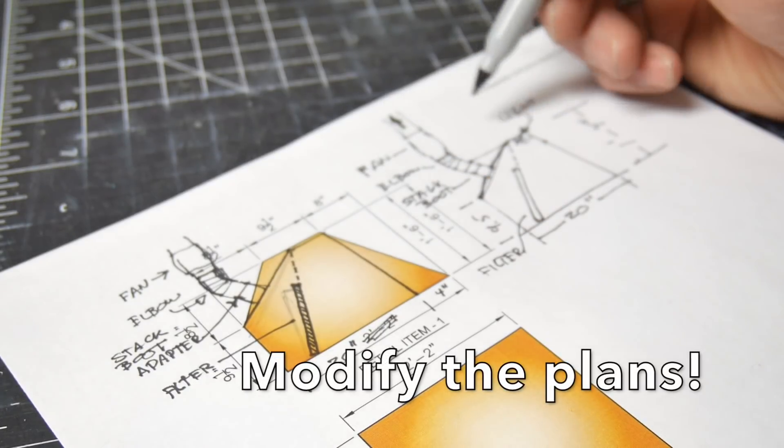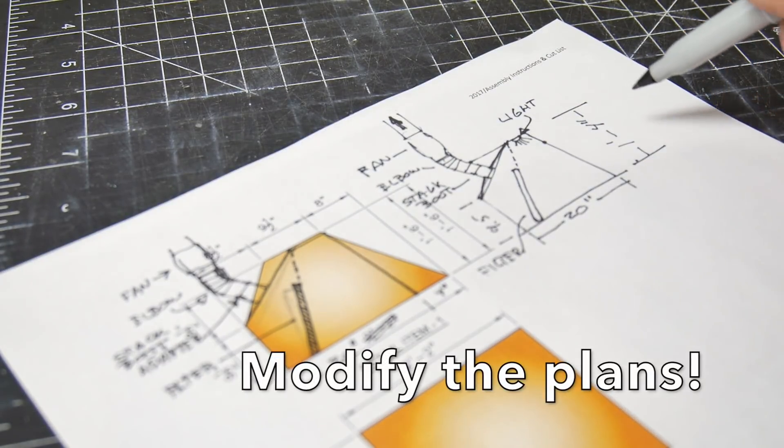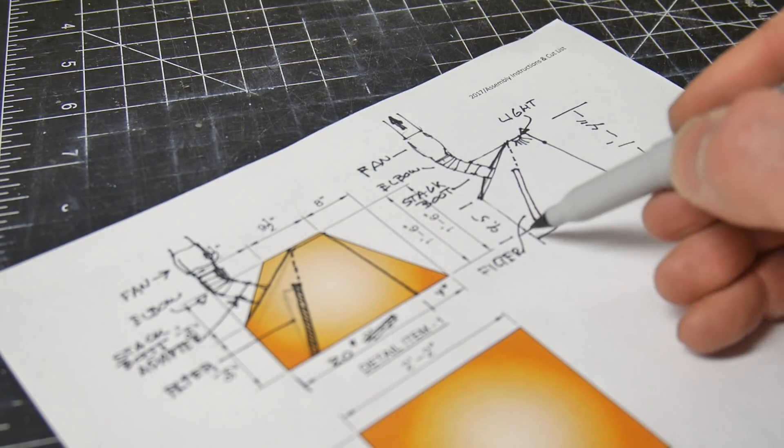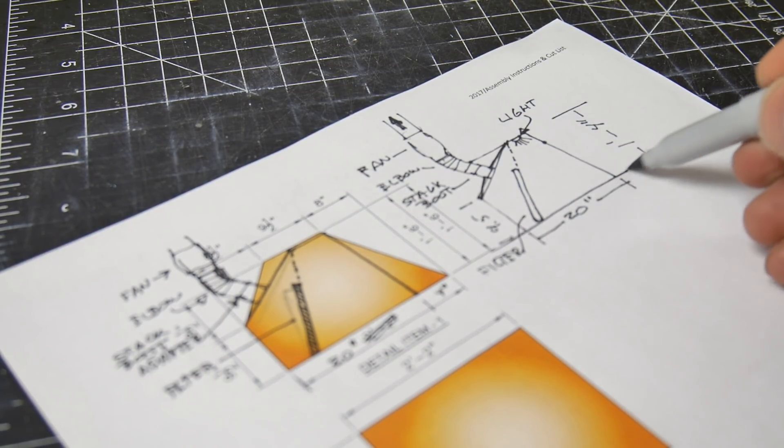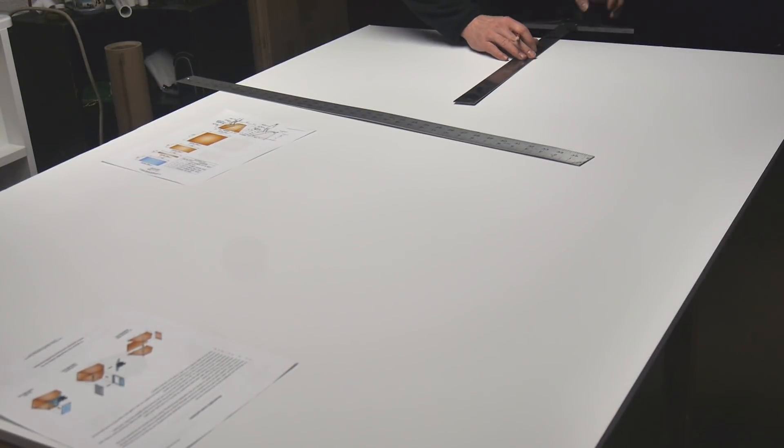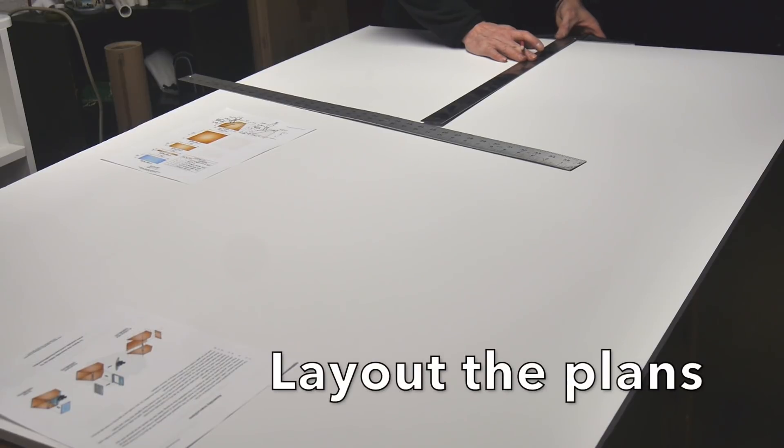It runs at 33 decibels, so it's quite quiet, and I needed to modify the plans a little bit. The plans from Ventworks show a side venting exhaust fan, and I had an exhaust hole right above where my fan was going to be, so I used a different fan.